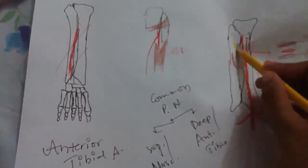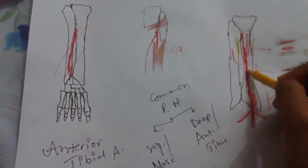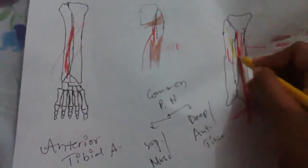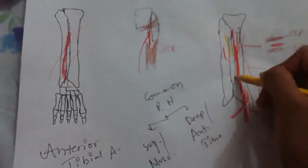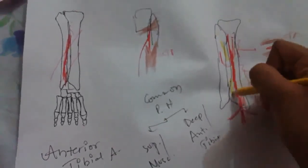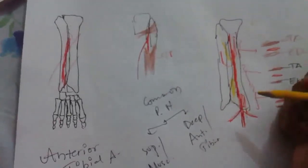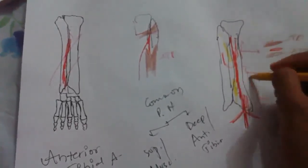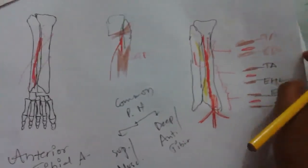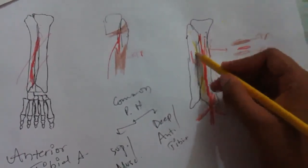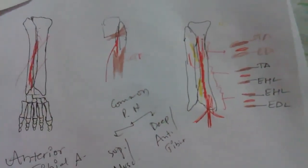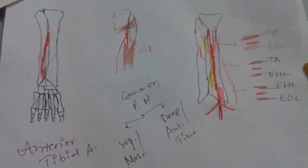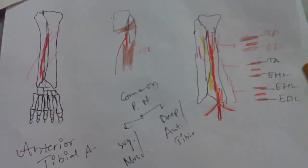In the anterior compartment, the deep peroneal nerve first lies lateral to the tibialis anterior, then crosses over it in the middle one-third, and then passes lateral again in the lower one-third — a course sometimes called 'nervous hesitance.' Its branches include muscular branches to all muscles of the anterior compartment and a cutaneous branch to the first digital cleft.